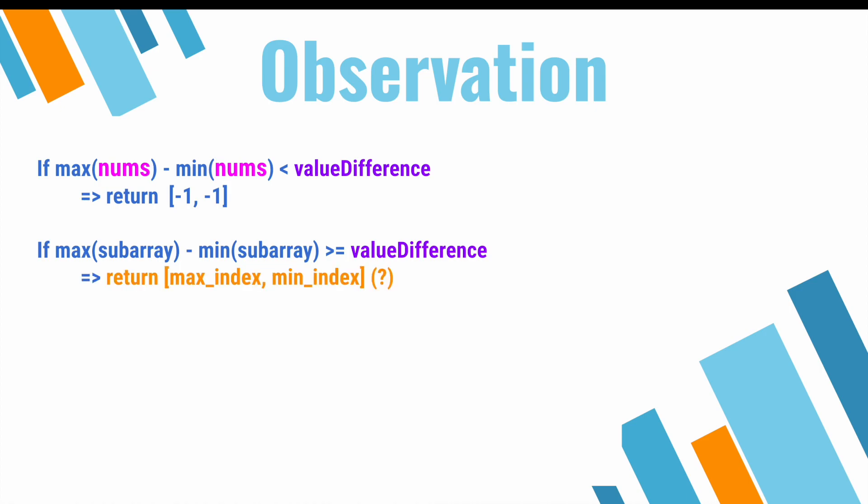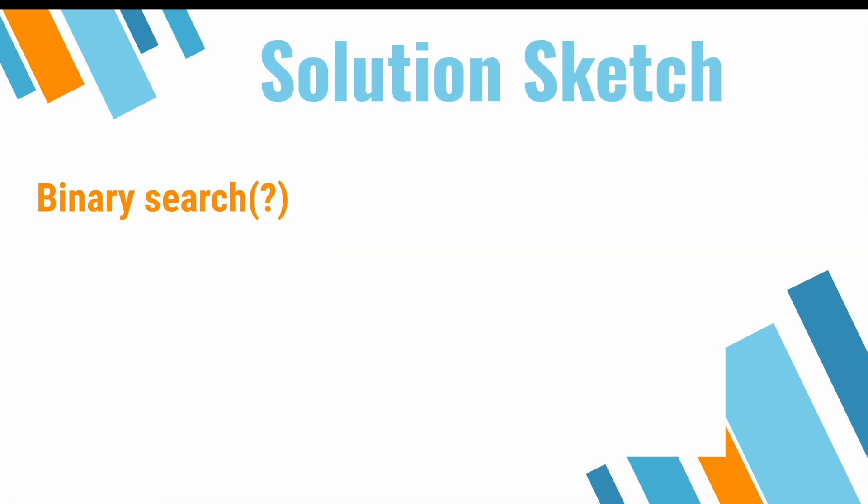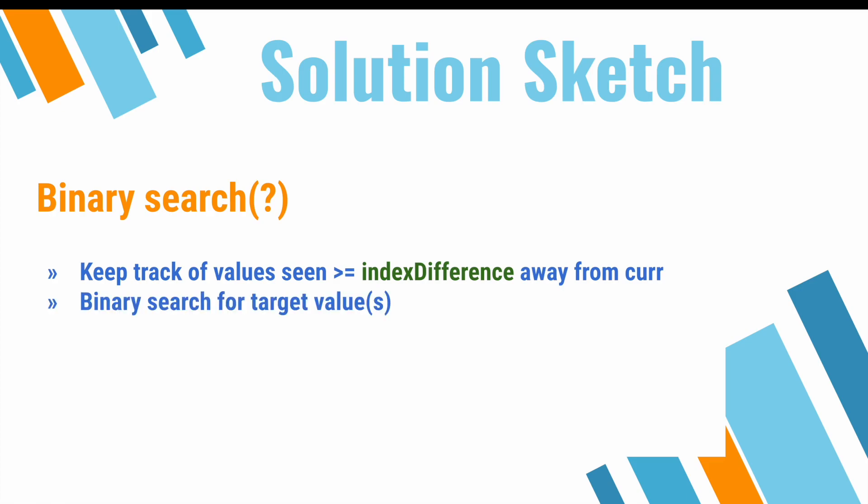But, if you went down this path, you probably realized pretty quickly that this won't really work because of our index difference constraint. You can only return these indices if they're at least index difference apart, and this is really getting at the crux of the problem. So, as a result of that, you might be then tempted to do a binary search based approach, and this actually works if you're careful. You'd keep track of values that are at least index difference away and just search for a value that satisfies our value constraint.